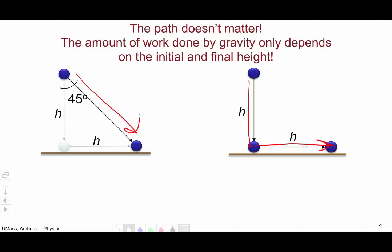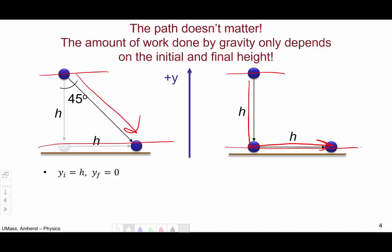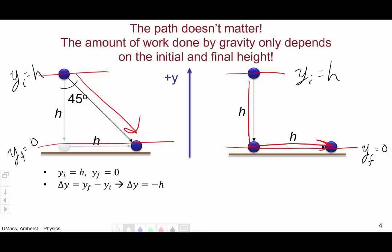We get the exact same result regardless of whether the ball goes straight down and straight over, or follows a diagonal path. The amount of work done by gravity only depends on the initial height and the final height of the ball. Let's define a coordinate system with positive y upward and zero at the floor. The initial height is h and the final height is 0, giving a delta y of negative h.